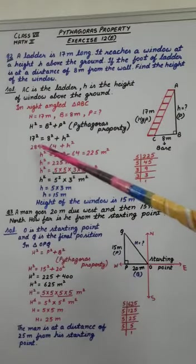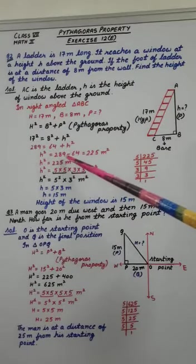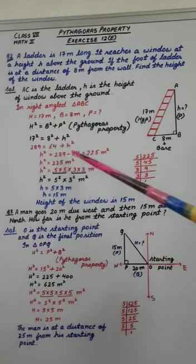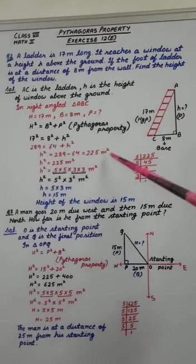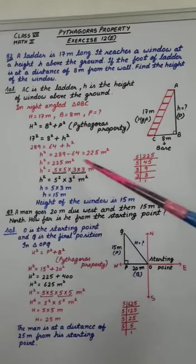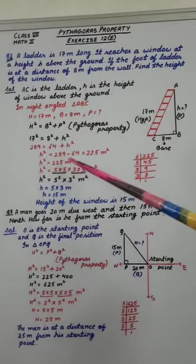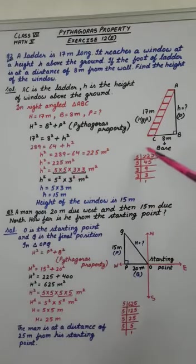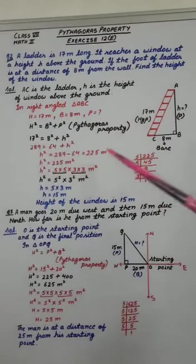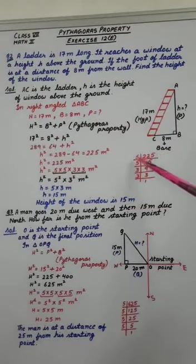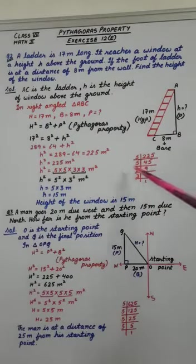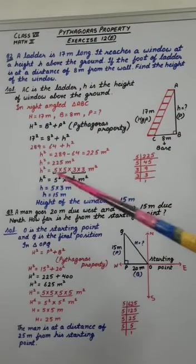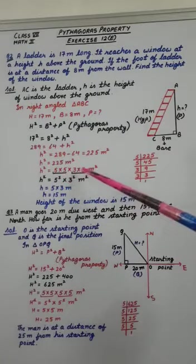Now, transposing it, H square equals 289 minus 64. Answer is 225 meter square. Now, we want to remove these squares. For that, we will take prime factorization of 225. So, when we are finding prime factorization, result is 5 into 5 into 3 into 3.